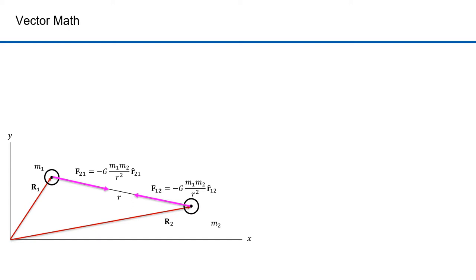I want to do some vector math to compute these quantities — really simple calculations. This is the vector form of the position function in three dimensions. Here I've broken up the position vector into x, y, and z components, each multiplied by the unit vectors i, j, and k corresponding to x, y, and z. I can simplify this by eliminating the unit vectors and expressing x, y, and z quantities in a one-dimensional matrix, which is also called a vector. By convention, x is first, y is second, and z is third. Vectors have tails and heads. For this position function, the tail is at the origin of the coordinate system. It's much simpler to characterize this vector as one set of coordinates, with the tail assumed to be at the origin.